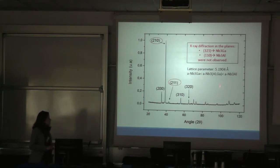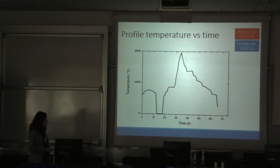We have the pattern of this mix of niobium, aluminum gallium. We find the main plane of diffraction, but is missing the main plane of diffraction for niobium-3-gallium and niobium-3-aluminum. The lattice parameter, as we expected, is between niobium-3-gallium and niobium-3-aluminum. This is how we measure the curve of temperature versus time. The heating rate is 90 Celsius per second, and the cooling rate is 15 Celsius per second.